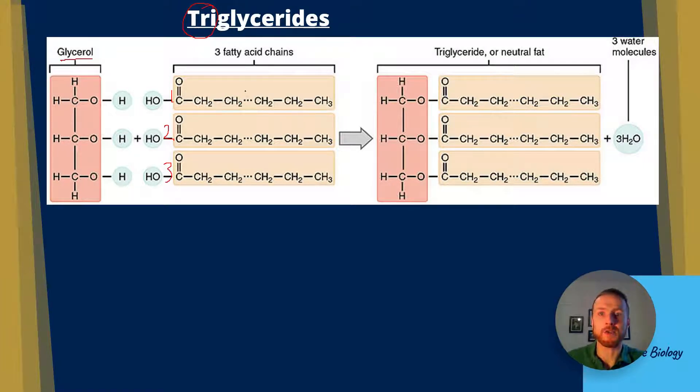A triglyceride has one, two, three fatty acids. You can see here the water is removed - H2O. We've got one hydrogen from the glycerol, and the OH from the carboxyl group of the fatty acid gets removed. That will form H2O. This forms our triglyceride. You can see we've got three H2Os there. The bond is between the oxygen of the glycerol and the carbon of the carboxyl group of the fatty acid. We remove three molecules of water to form an ester bond between three fatty acids and glycerol.